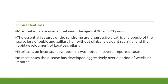Most patients are women between ages 30 to 70 years. Essential features include progressive cicatricial alopecia of the scalp, loss of pubic and axillary hairs with clinical evidence of scarring, and development of keratosis pilaris. Pruritus is an inconstant feature but reported in many cases. In most cases the disease develops aggressively over a period of weeks or months.